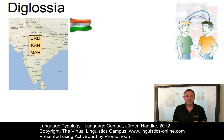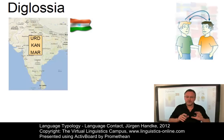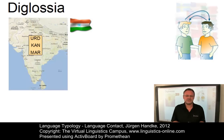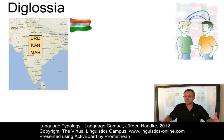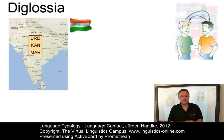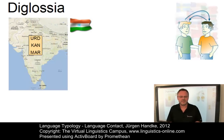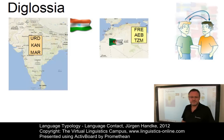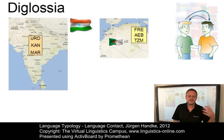Some communities have highly regular patterns of code switching according to the setting or context of speech, resulting in what is called diglossia, where one code is used in informal contexts such as the home and neighborhood, while the other is used in more formal settings such as school, church, and government. An example of such a situation is Algeria, where Arabic, French, and Tamazight are used in different settings.